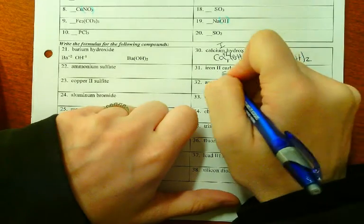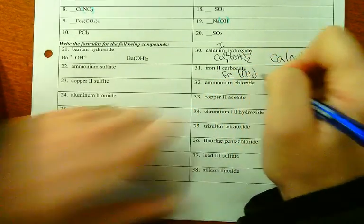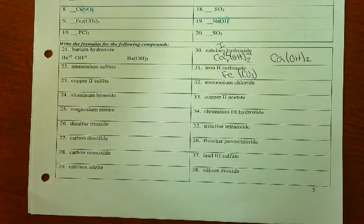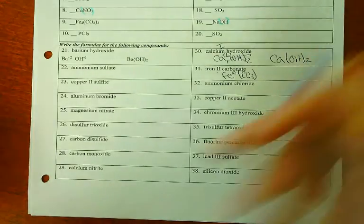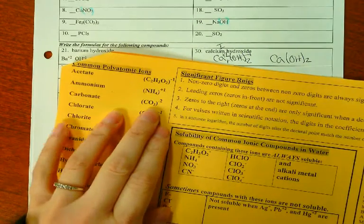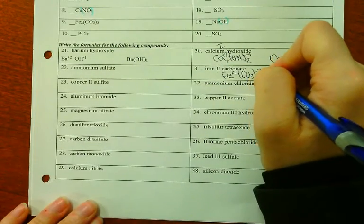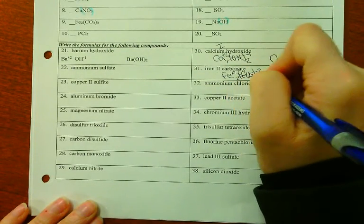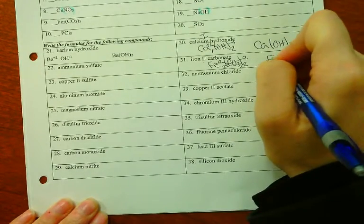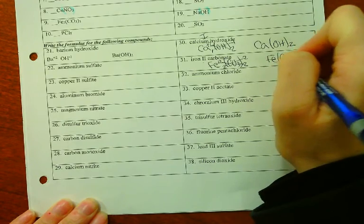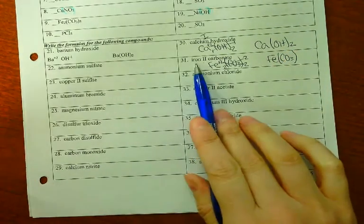Iron II carbonate: symbols Fe, CO3 carbonate. It tells you right there in the name that it's iron 2, so iron is making plus 2. Carbonate, if you look it up on your polyatomic list, is negative 2. When we crisscross, they're both 2s, which means they cancel each other out. FeCO3.